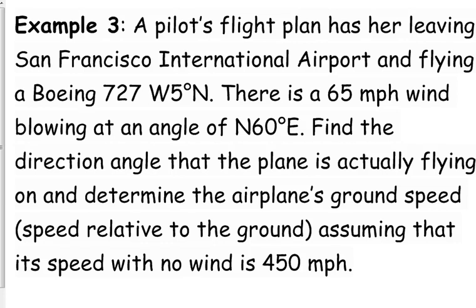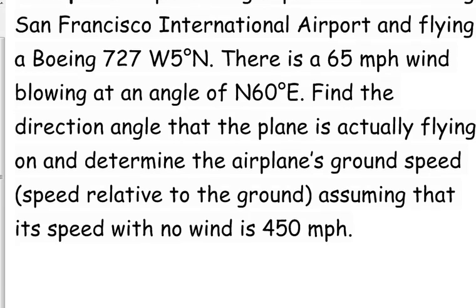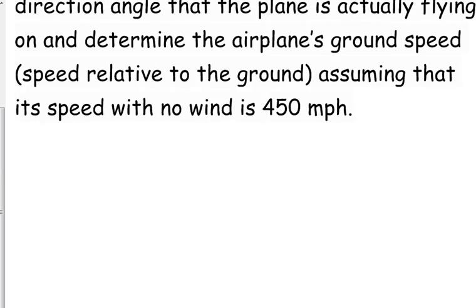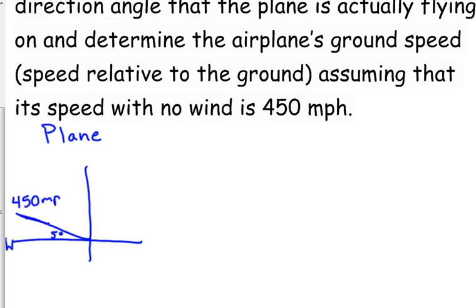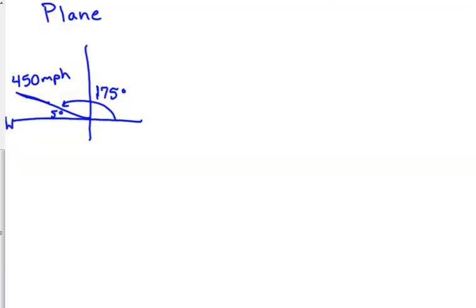So we're going to find the actual speed and direction that the plane is flying. Let's start with the plane. The plane is flying west. We've got to start west and go 5 degrees towards north. So that angle is with the negative x-axis and its speed is 450 miles per hour. We're actually going to use 175 in our calculations because your angle must always be measured from the positive x-axis.